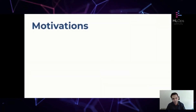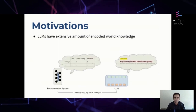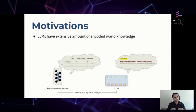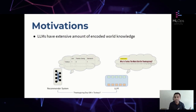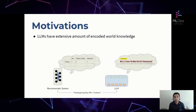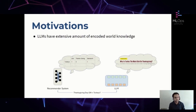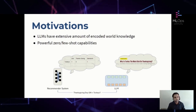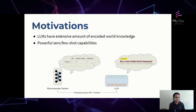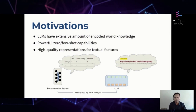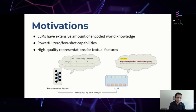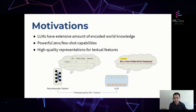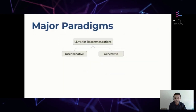One of the big motivations for using LLMs for recommendations is that LLMs encode a massive amount of external knowledge that can supplement the user behavior data we commonly use in recommenders. For example, because of its web-scale knowledge, an LLM can recommend a user to buy turkeys when it is Thanksgiving, but a traditional recommender system may not be able to do that if there is no logged click behavior relating turkeys with Thanksgiving. LLMs have also shown strong zero-shot and few-shot capabilities, which can help with data sparsity and cold start challenges, and we can utilize high-quality textual feature representations from LLMs to more effectively model user profiles and item descriptions.